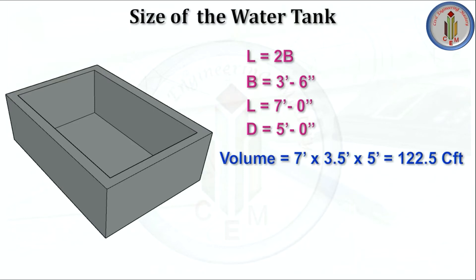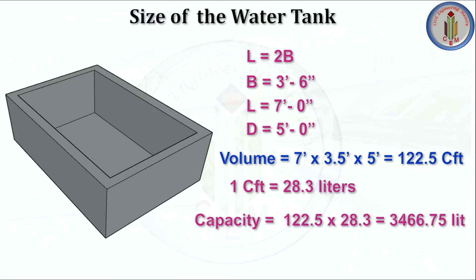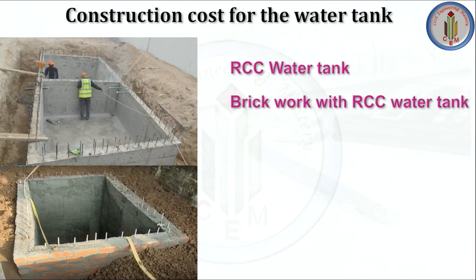We have arrived at the size of the water tank: length is seven feet, width is three feet six inches, and depth is five feet. The volume is 122.5 cft. Since one cft stores 28.3 liters, the capacity is 122.5 × 28.3 = 3466.75 liters — approximately 3500 liters. So this size of tank can store 3500 liters of water.